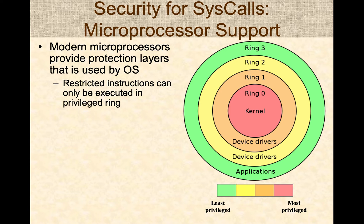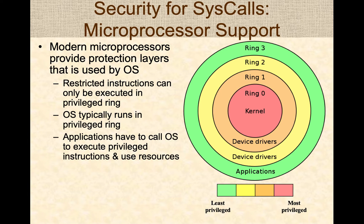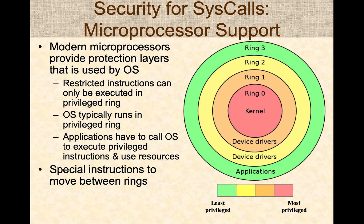Restricted instructions can run only in the privileged ring, and the kernel is the only piece of software allowed to run these privileged instructions that are necessary to manage and interface with hardware resources. All applications have to call the operating system to execute these privileged instructions and access resources — and this call is called a system call. Special instructions are used by the microprocessor to move between rings, ensuring that calls going to the kernel are safe and secure, and this calling feature is used to implement system calls on most operating systems.